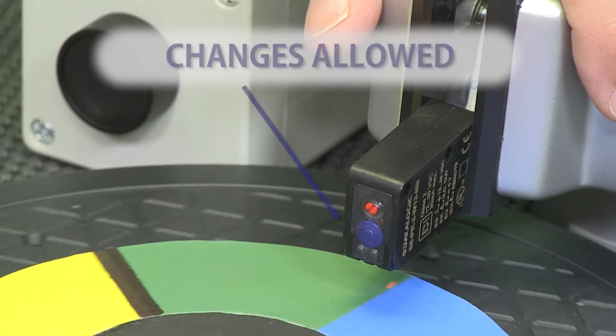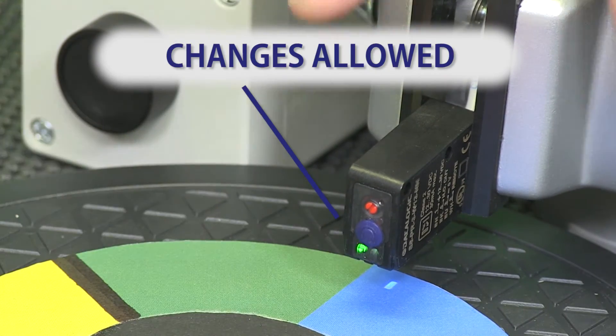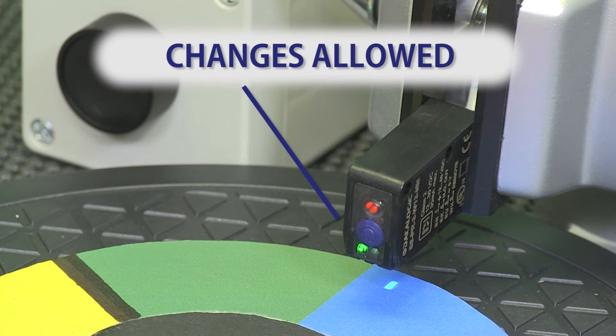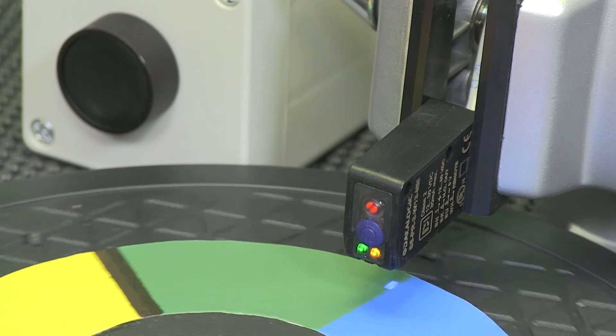This sensor also has a key lock function but does not have a key lock graphic on the sensor or a key lock LED like the TL46 models.